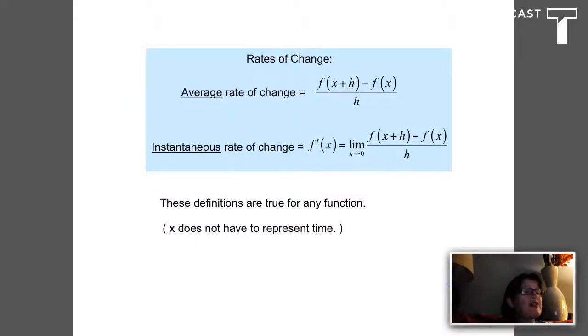So now we've talked about two kinds of rates of change. We have the average rate of change, which is f of b minus f of a over b minus a, or this definition here: f of x plus h minus f of x over h. We can compute that for any function for which we can compute the two values. There's no calculus involved.